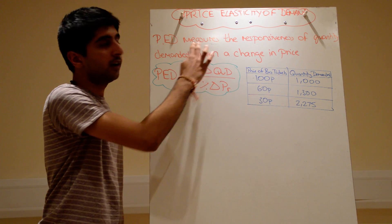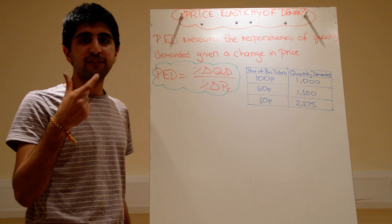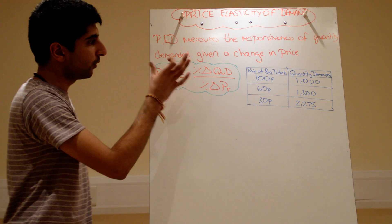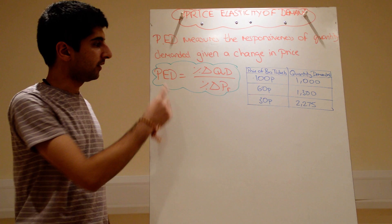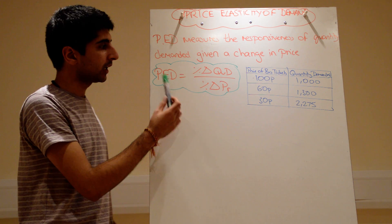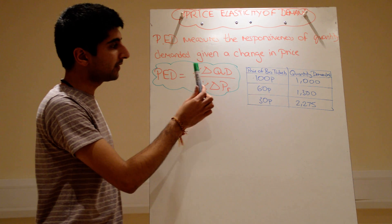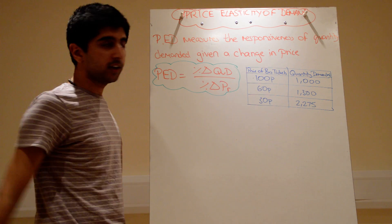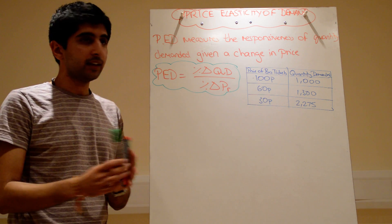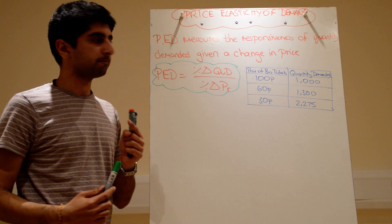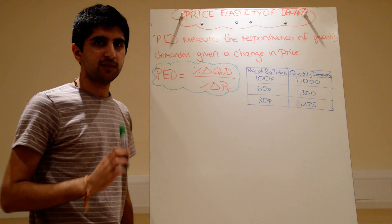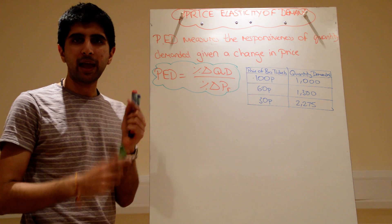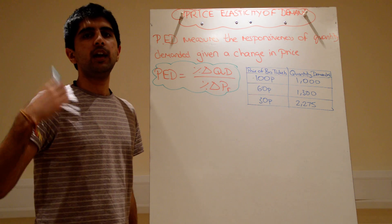It is a measure. We can use an equation to actually get a figure for this elasticity value, and that figure tells us a lot about the responsiveness of quantity demanded. Price elasticity of demand can be measured by working out the percentage change in quantity demanded over the percentage change in price. When we know our price figures and our quantity figures, we can work out the percentage changes in both and plug them into this equation. We use percentage changes because raw figures don't tell us much — we need to convert them into a common unit we can compare easily.